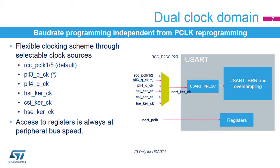The USART has a flexible clocking scheme. Its clock source can be selected in the RCC and can be either the peripheral clock or APB clock, the PLL-3Q (only in case of USART-1), the PLL-4Q, the HSI, CSI, or HSE clock. The USART clock source can be divided by a programmable factor in the USART-PRESC register. The registers are accessed through the APB bus and the kernel is clocked with USART-KERCK, pre-scaled or not, which is independent from the APB clock.